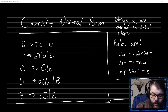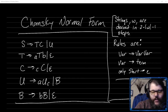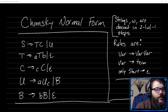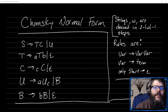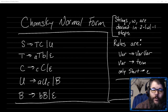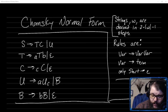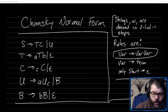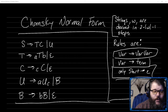One of the advantages of Chomsky normal form is that any string derived by the grammar will be derived in two times the length of that string minus one steps. That's because every rule either generates an extra variable or it turns a variable into a terminal. So every rule has to be variable goes to two variables, or variable goes to terminal. And the only rule that's allowed to go to the empty string is the start state.